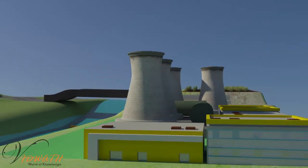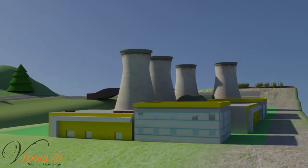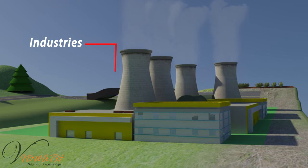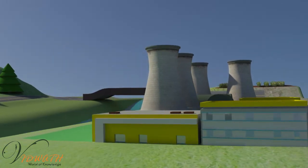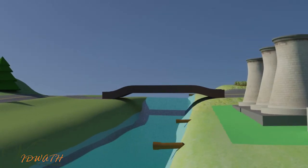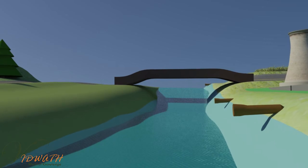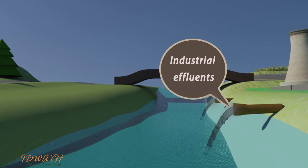Industrial waste: Minerals have the capability to change the colour of water, increase the amount of minerals — also known as eutrophication — change the temperature of water, and pose serious hazard to water organisms.